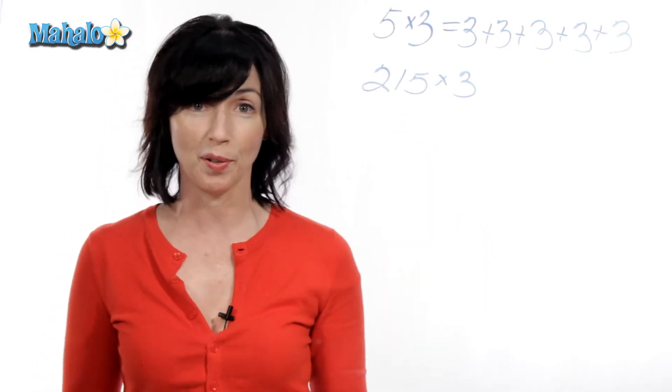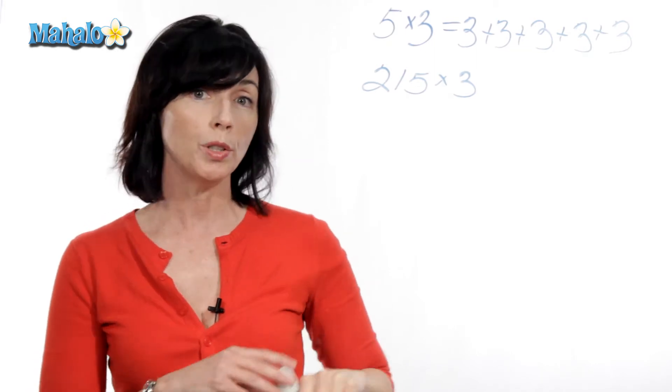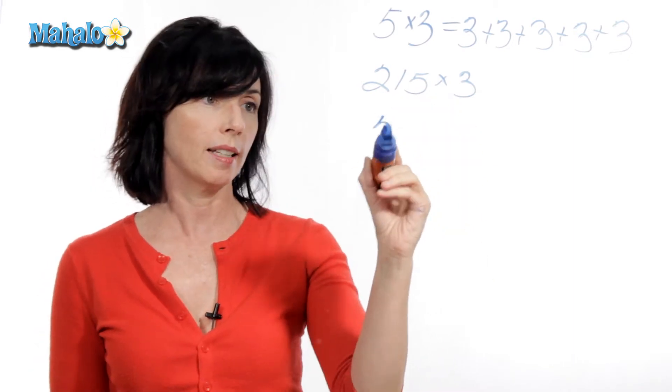So we have a way of doing this. It's called an algorithm, and I'm gonna show it to you right now. Now, when you do this, you wanna rewrite your multiplication vertically. So you're gonna write it like this.